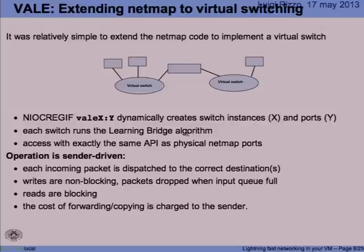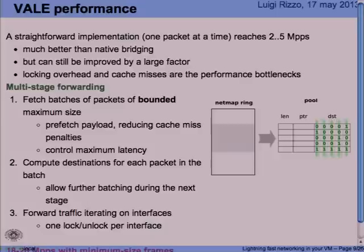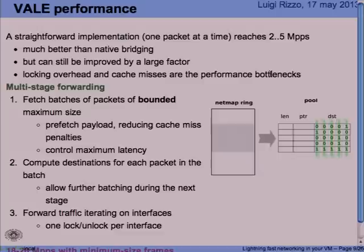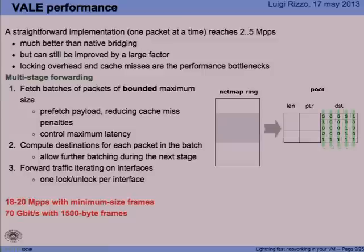The operation is entirely software-driven and each incoming packet is dispatched to one or more destinations, so throughput depends on how many copies you need. In terms of performance, if you implemented Vale in a straightforward way processing one packet at a time, you would only reach between 2 and 5 million packets per second, which is not very fast. However, by exploiting batching and trying to reduce lock access — requesting one lock for each batch per interface — we managed to reach a throughput of about 18 to 20 million packets per second with minimum size frames, and 70 gigabits per second with larger frames. 70 gigabits per second is basically limited by the memory bandwidth of the system.